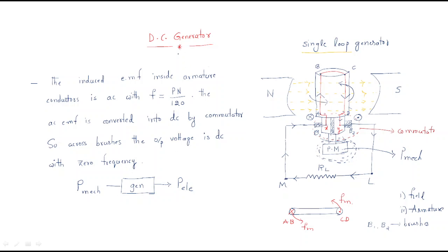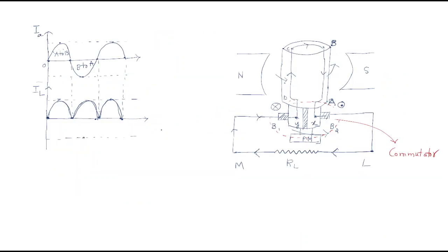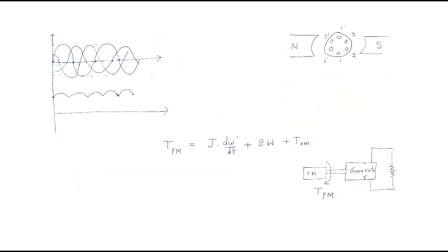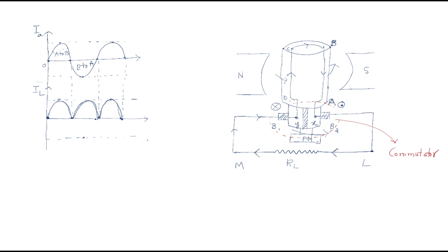Hello everyone. In the last session we discussed about the DC generator and the working of the DC generator. We will continue. In the DC generator, we generally give mechanical power to the prime mover and the EMF will be generated across the armature conductors. These things we already discussed and we should continue.